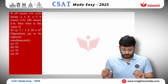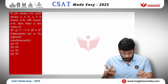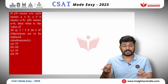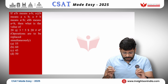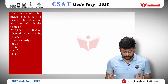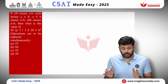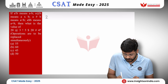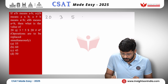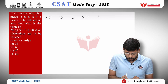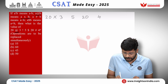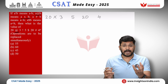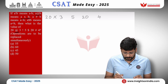Now we shall see what notations are. Look at this question: if A exclamation mark B means A minus B, A at B means A multiplied by B, A hash B means A divided by B, and A dollar B means A plus B — then what is the value of 20 at 3 exclamation mark 5 dollar 20 hash 4?